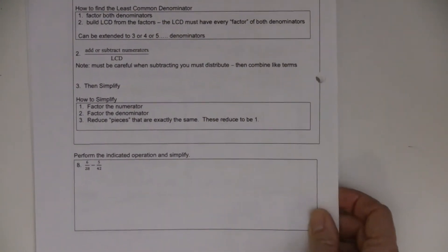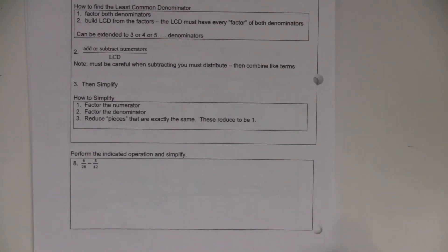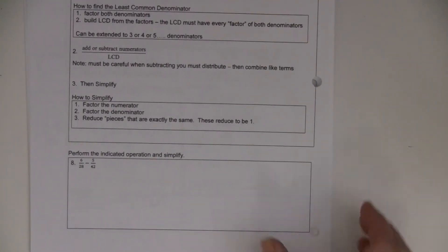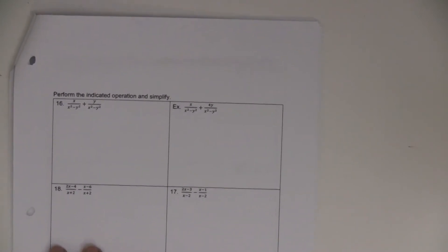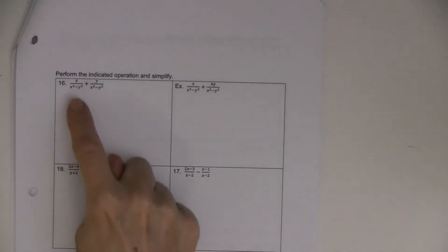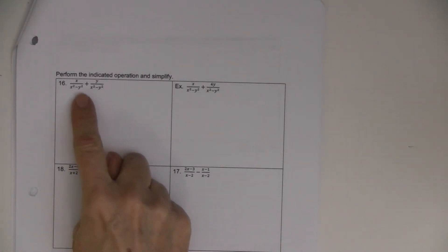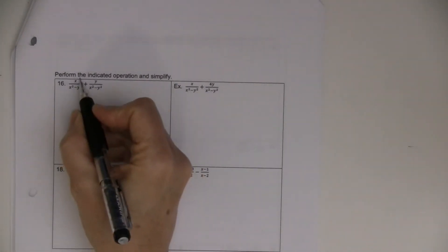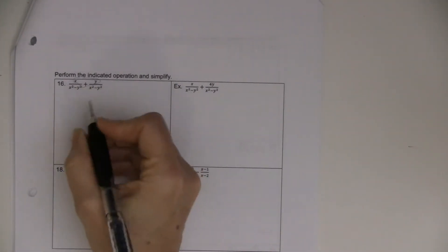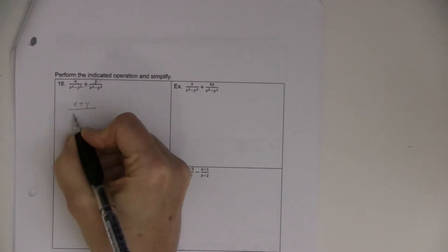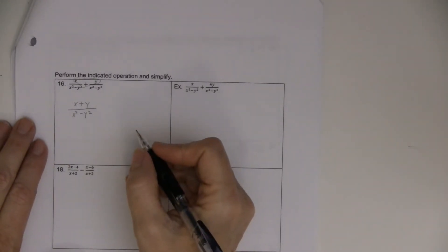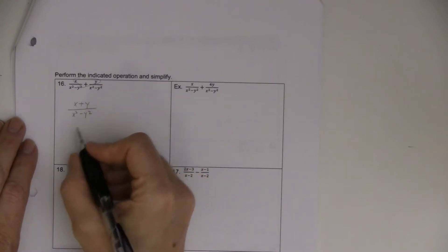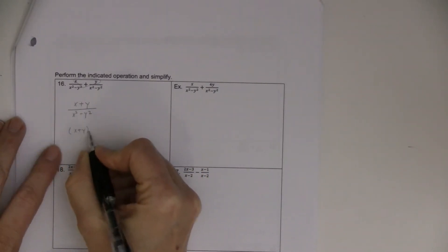All of these first problems do have a common denominator. I'm going to skip problem 8 and go to where they do have a common denominator. So number 16 — they both have the same denominator. What you do is you add the numerators, because it says add, over the common denominator. That gives x plus y over x squared minus y squared. And then we're not done, because we have to simplify. How you simplify is by factoring the numerator, but x plus y doesn't factor, so I put parentheses around it to show I thought about it.